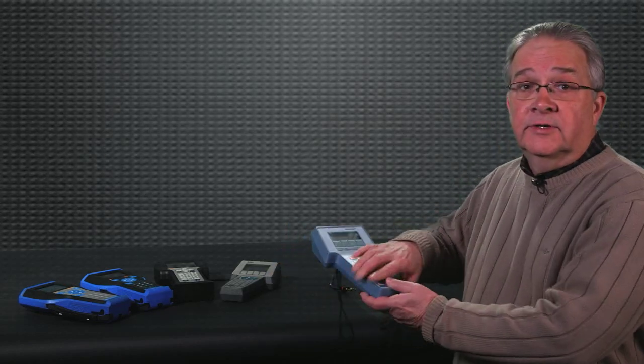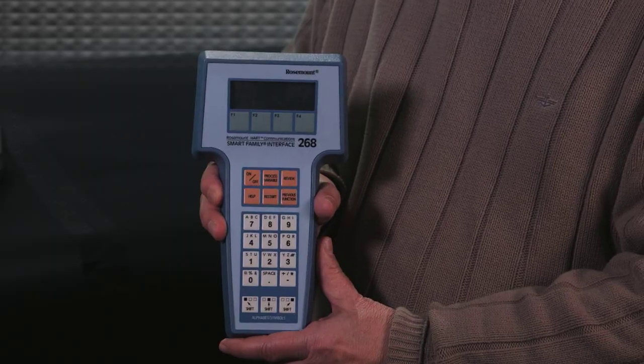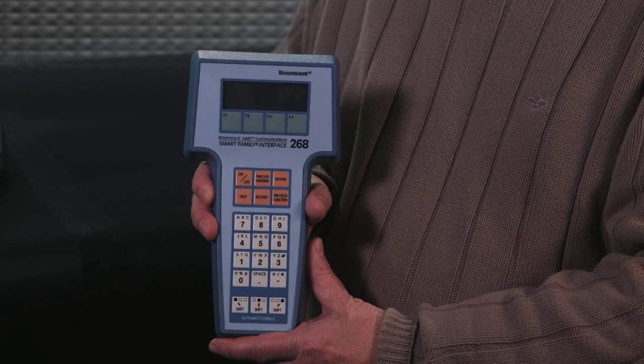In the 1980s the 268 HART communicator was introduced and this was the first intrinsically safe handheld to handle all Rosemount devices.